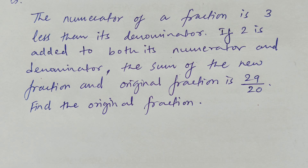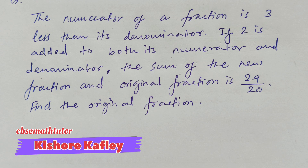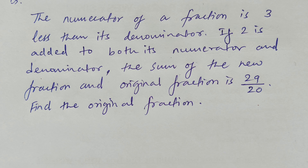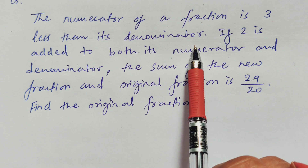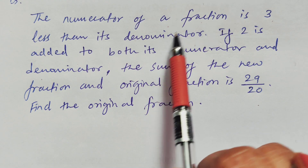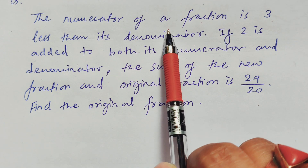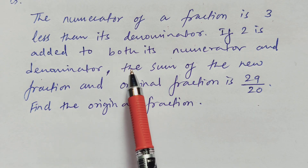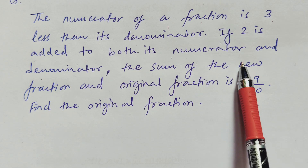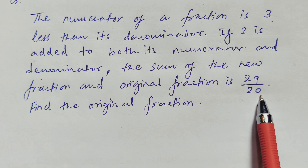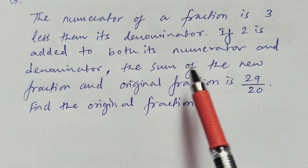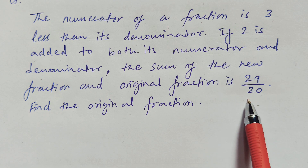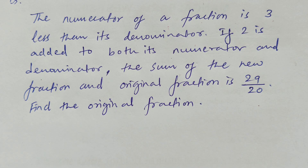Hello friends, welcome back to CBSE Math Tutor. In today's lesson we are going to solve a word problem on the topic of quadratic equations related to fractions. The question says the numerator of a fraction is 3 less than its denominator, meaning the denominator is 3 more than the numerator. If 2 is added to both its numerator and denominator, the sum of the new fraction and the original fraction is 29 by 20. We have to find the original fraction.